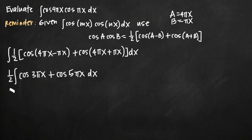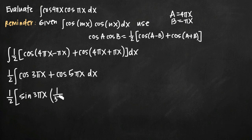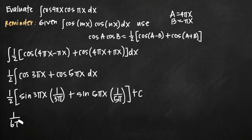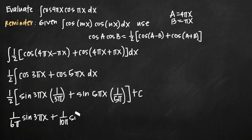We know the integral of cosine is sine. So we get sine of 3πx, but by the chain rule we divide by the derivative of the inside function, giving 1 over 3π. Then similarly, we get sine of 5πx divided by 5π, plus the constant of integration C. Simplifying by multiplying the ½ through, we get (1 over 6π) times sine of 3πx plus (1 over 10π) times sine of 5πx plus C. That's our final answer.